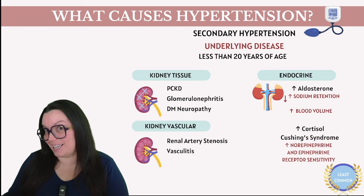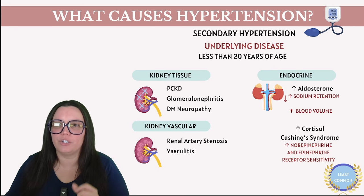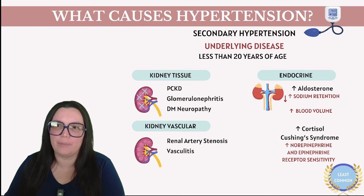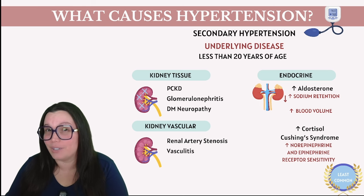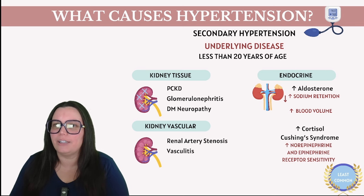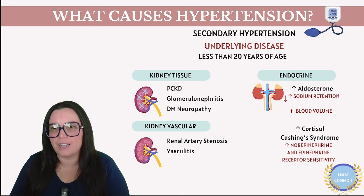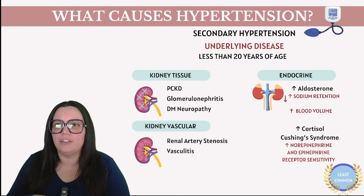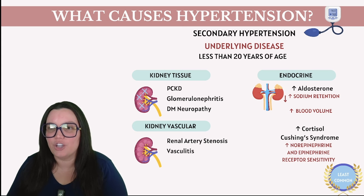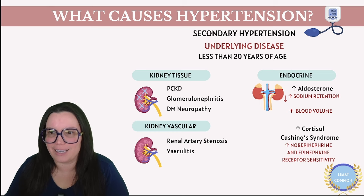Now let's talk about secondary hypertension. It's important to note that it is the less common type of hypertension, accounting for only about 10% of cases. When considering secondary hypertension, particularly in exam and clinical settings, you're often going to be looking at younger individuals — typically under 20 years of age — who have hypertension due to some underlying disease.